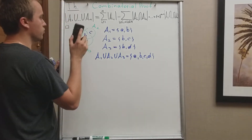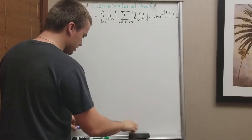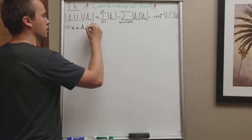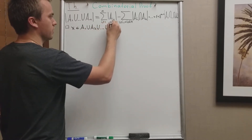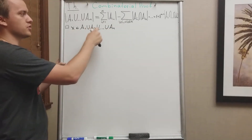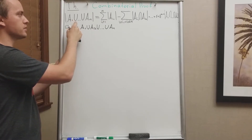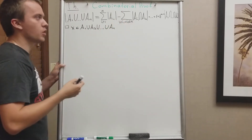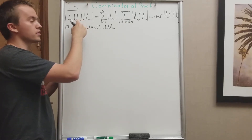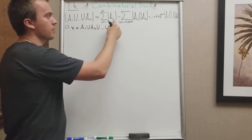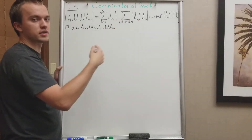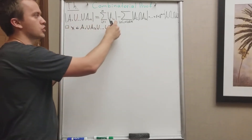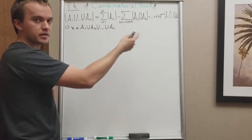How does the combinatorial proof actually work? It works in the following way. If we take element x belonging to a1 union a2 union ... union an, we know x belongs to this union only once. So on the left-hand side we count this element only once. The idea of the combinatorial proof is: every time I choose my element x on the left-hand side, if I count this element on the right-hand side using the formula, I will get 1 as a result.